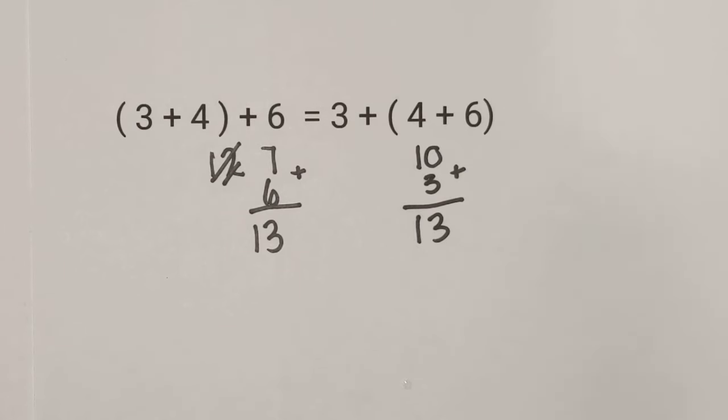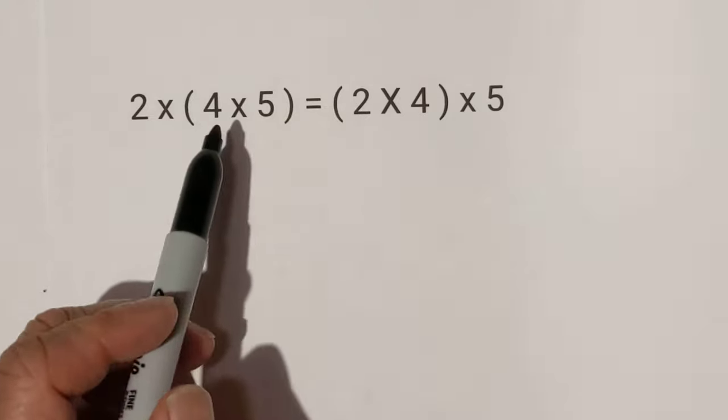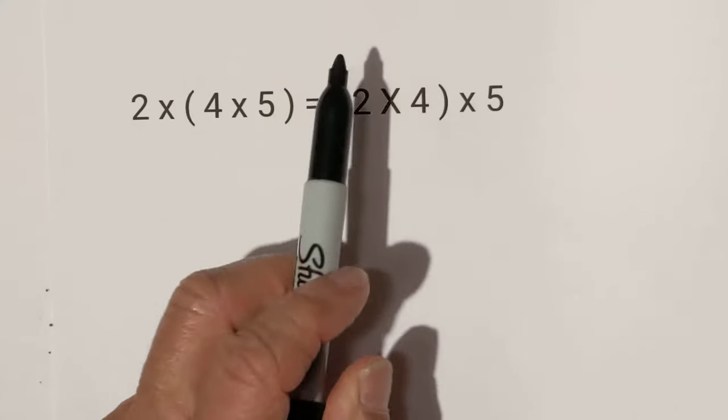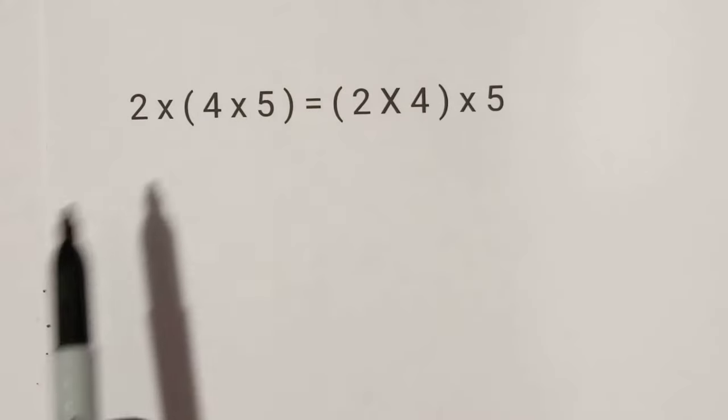Now let's look at multiplication. Same thing. This side, the 4 is associated with the 5. This side, it's associated with the 2, but it's not going to impact it because we have all multiplication.